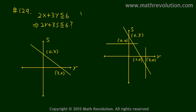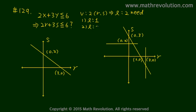We have two variables, r and s, and to match the number of variables we need two equations. Conditions 1 and 2 will each give us one equation, and we expect C to be our answer. Let's consider conditions 1 and 2 together and see if that's the case.